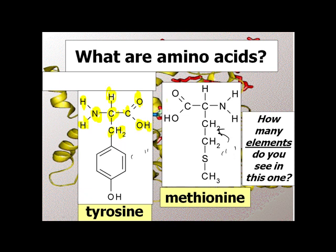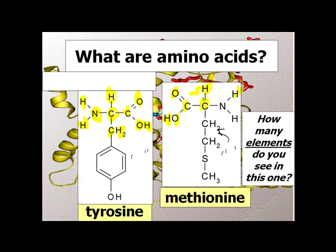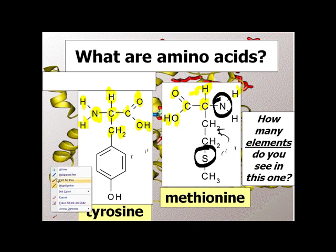Methionine. Well, I've got some hydrogen, oxygen, carbon, and we have a nitrogen — that's four. There's also a sulfur down here — that's five. So essentially we get five elements possible in an amino acid.